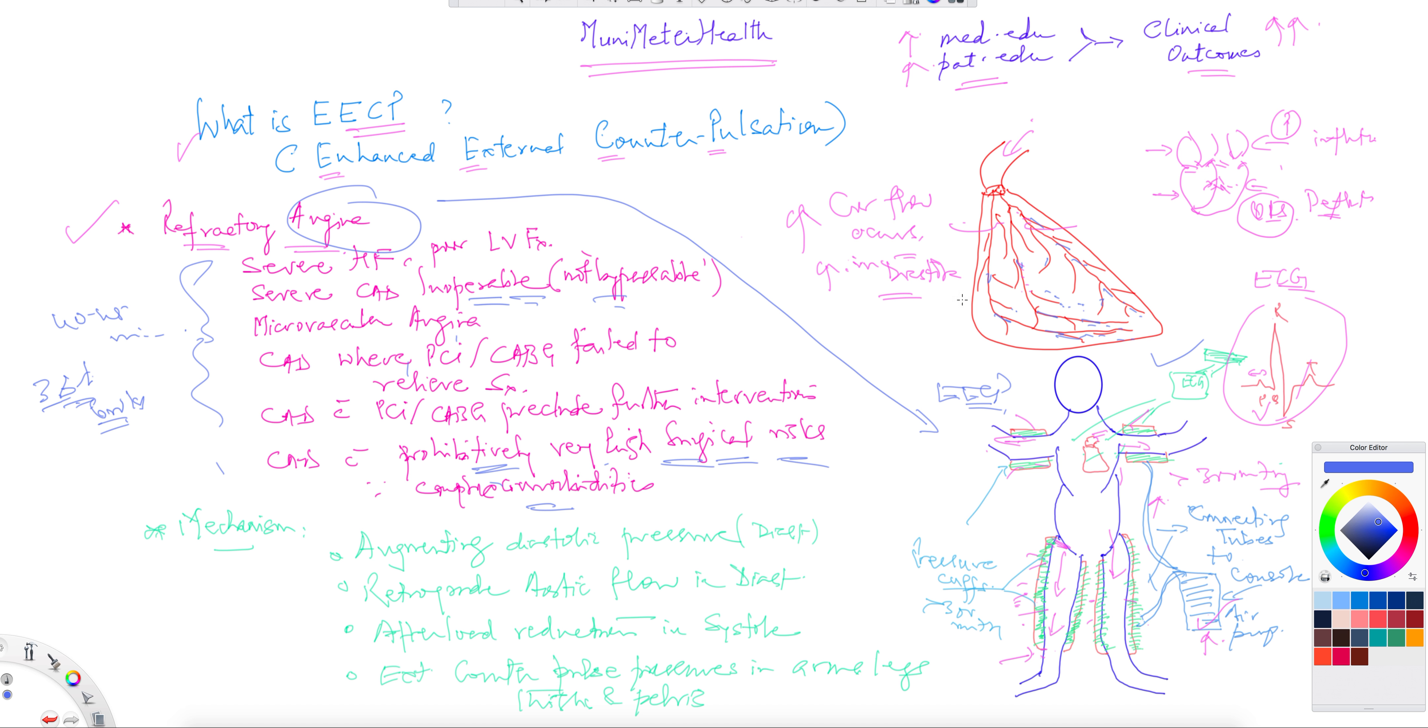The only contraindication is when you have an aortic valve problem. If you have an aortic valve problem, you cannot take this patient for surgery. Or if you have an aortic problem like an aortic aneurysm or some impending dissection, any aortic issue, do not bring this patient into the EECP. There are some relative contraindications which is beyond our discussion here.